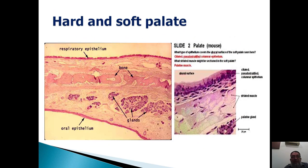Now this is a slide of hard and soft palate. This is the oral epithelium from the inward side — stratified squamous non-keratinized. These are the salivary glands; look at the groups of the mucous acini. Then there is the spongy network of bone, then the lamina propria of the nasal side. This is the pseudostratified columnar ciliated epithelium with goblet cells — a characteristic feature of respiratory epithelium. This is the nasal side and this is the oral side of the hard palate.